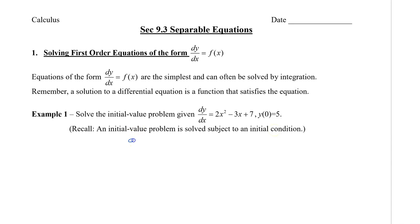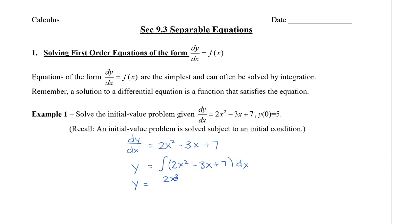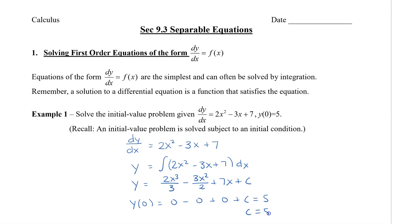To solve this, let me rewrite it out first. Therefore, y is equal to the integral of 2x squared minus 3x plus 7 dx. When I integrate, I get 2x cubed over 3 minus 3x squared over 2 plus 7x plus c. This is the most general solution. Now we're going to plug in 0 for x and 5 for y. So y of 0 is equal to 0 minus 0 plus 0 plus c, which equals 5. Therefore, c equals 5.